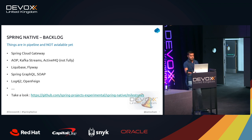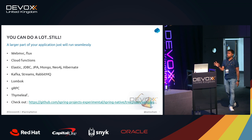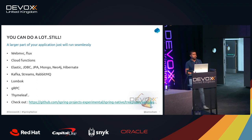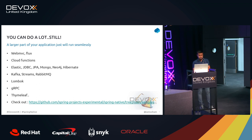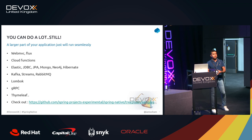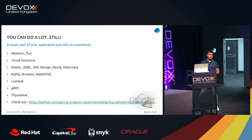All that negativity aside, you can still do a lot. If you take a step back and think about the applications in your project, there are still many things you can do: Thymeleaf, gRPC, normal WebMVC or WebFlux, Cloud Functions, Lombok if you're a fan, Kafka, RabbitMQ, and Streams — with limitations, but things are available. Check out the samples in the Spring Native project — they have a ton, actually.